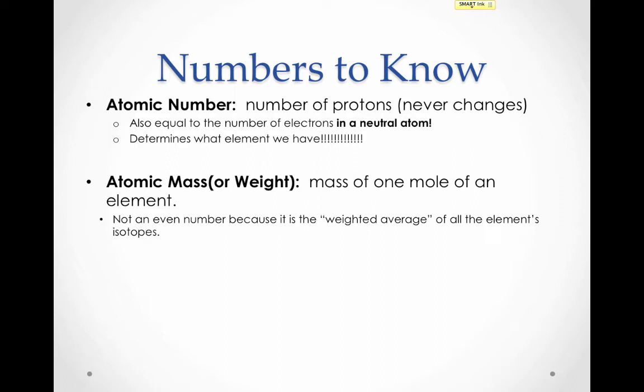Isotopes are atoms of the same element with a different number of neutrons and therefore a different mass. This will all be covered in a future video, but for now what you need to know is that we take a weighted average of all these isotopes' masses to get the atomic mass.